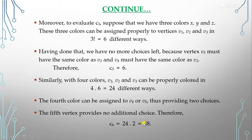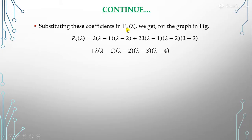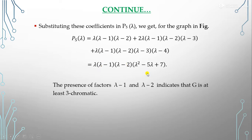Substituting all coefficients into P_5(λ) gives the polynomial, which simplifies to λ(λ−1)(λ−2)(λ²−5λ+7). This is the required chromatic polynomial of the given graph. We can verify that the factors (λ−1) and (λ−2) are present, indicating that G is at least 3-chromatic, since the roots 1 and 2 mean fewer than 3 colors are insufficient.